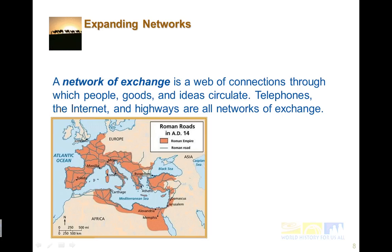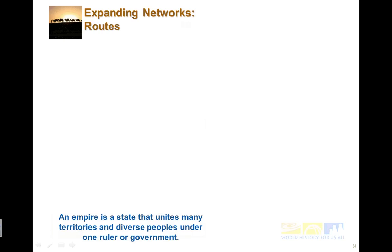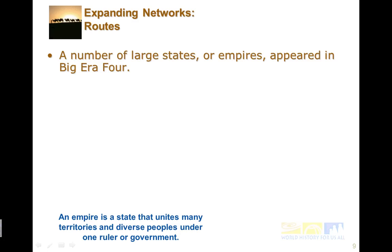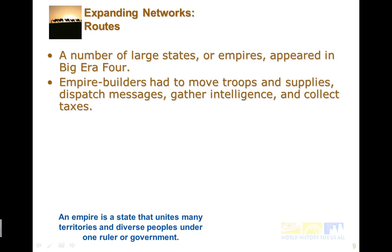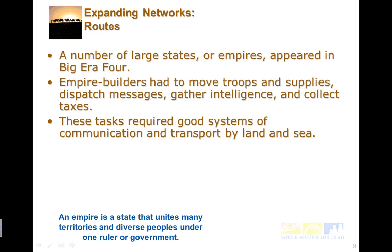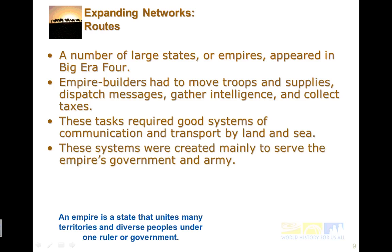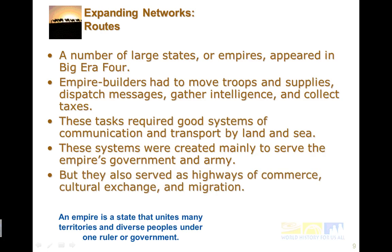Here's a map of Roman roads in 14 CE, and those are part of the early networks of exchange. With extending networks, we see empires start to show up. An empire is a state that unites many territories and diverse peoples under one ruler or government — lots of different people living under one government. Empire builders had to move troops and supplies, dispatch messages, gather intelligence, and collect taxes. This required good systems of communication and transport by both land and sea, and these systems were created mainly to serve the empire's government and army.